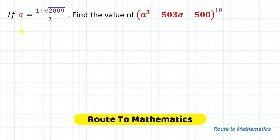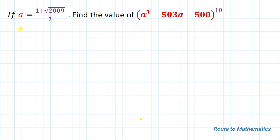Hello everyone, welcome to Root to Mathematics. In this video we are going to solve a math olympiad question. The given question is: if a equals (1 + √2009) / 2, then find the value of (a³ - 503a - 500)^10. Without any delay, let's start solving this problem.